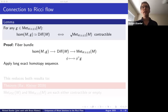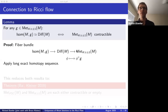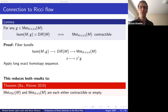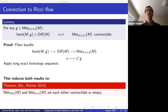The lemma reduces both results I mentioned to one common theorem concerning spaces of metrics: namely, that the space of positive scalar curvature metrics or the space of constant positive curvature metrics on a compact three-manifold are either contractible or empty. This is the theorem I want to focus on for the rest of the talk — we can completely forget about the diffeomorphism group. The lemma holds in all dimensions, though proving contractibility is hard and not always true.